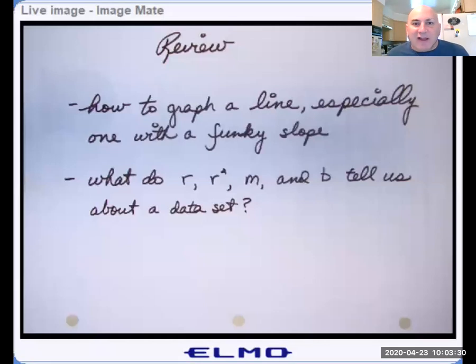I know you've been graphing lines probably since middle school. Many of you might have forgotten or you think you remember, but what if the slope is funky? What if it isn't two down and one right? We're going to review how to graph a regression line because regression lines usually have funky slopes. Then we'll review what R, R squared, M, and B all tell us about a data set. Not about the line, but about the data set itself.